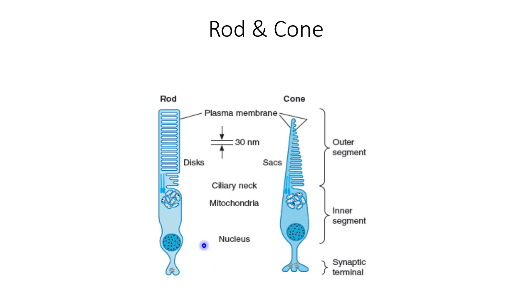On the outer surface of the retina, photoreceptors are elongated cells. There are three segments: the synaptic terminal, the inner segment — which contains the nucleus and a large amount of mitochondria — and through a small ciliary stalk it is connected to the outer segment. The rod outer segment has tightly packed stacks of disc membranes, which are flattened membrane-bound intracellular organelles.